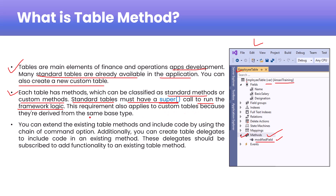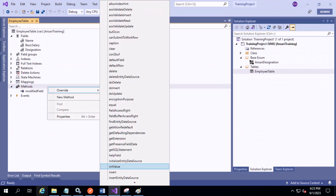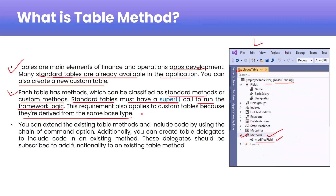This requirement also applies to custom tables because they are derived from the same base type. However, if you are overriding a base class method in a custom table, that particular method should contain a super() call. If you are not overriding any standard method, then there should not be any super() call.